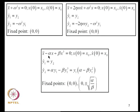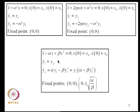Consider the nonlinear system X-double-dot − α·X + β·X³ = 0. In state space: Y1-dot = Y2, Y2-dot = α·Y1 − β·Y1³ = Y1(α − β·Y1²). The fixed points are Y2 = 0 and either Y1 = 0 or Y1 = ±√(α/β), giving three fixed points: (0,0), (0, +√(α/β)), and (0, −√(α/β)). For linear systems there is only one fixed point, whereas for a nonlinear system there can be more than one.